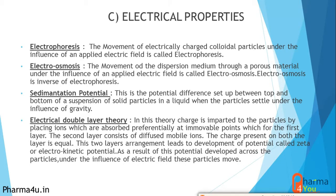The electrical double layer theory: charge is imparted to the particle by ions absorbed preferentially at specific points, forming the first layer. The second layer consists of diffuse mobile ions. The charge on both layers is equal, and this arrangement leads to the development of a potential called the zeta potential or electrokinetic potential. Under the influence of an electric field, this potential causes the particle to move. The work done in converting coarse particles to colloidal particles is converted into this charge — the electrical double layer — which is then used for electrophoresis and electroosmosis.